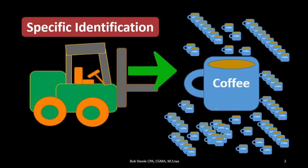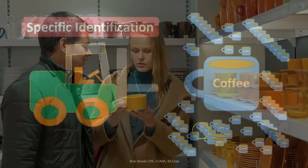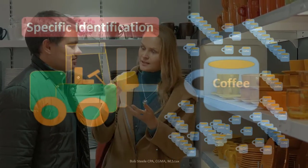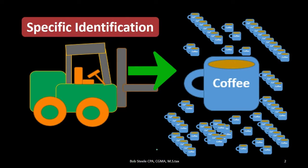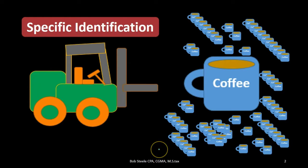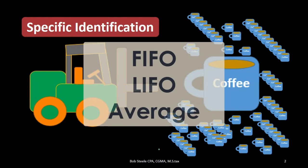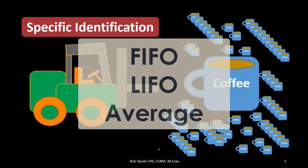If we're selling something else like coffee mugs, we may have a large amount of them and they may all be completely the same. Therefore, giving them all identification numbers and trying to track exactly which mug we sold may not be a good use of our time. It may be better to use some type of estimating method — first in first out, last in first out, or an average method. Let's compare and contrast those methods briefly.